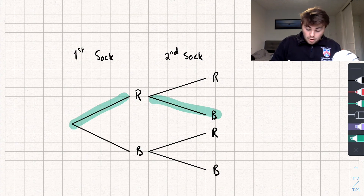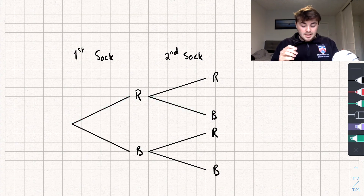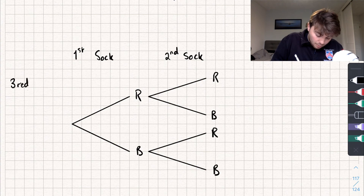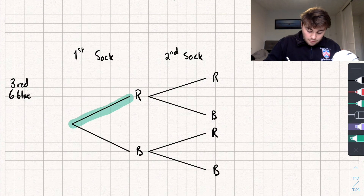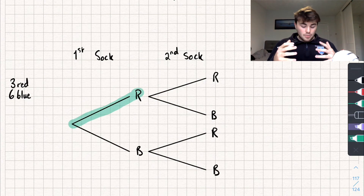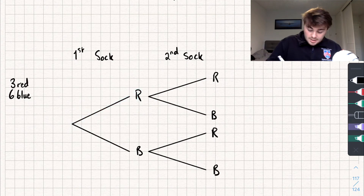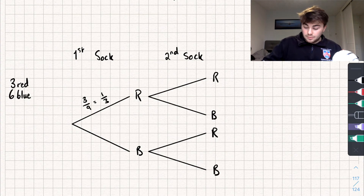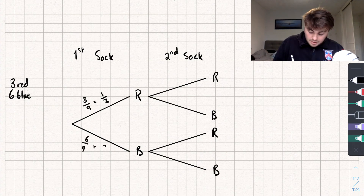We call these parts of the tree the branches, and we write the probability of the event happening on each branch. So let's fill in the tree. We have three red socks and six blue socks. The probability the first sock is red is three out of nine, which is one third. The probability it's blue is six out of nine, which is two thirds.